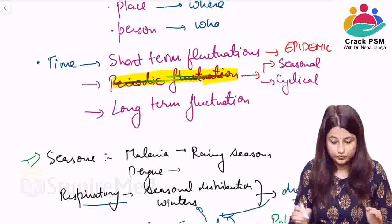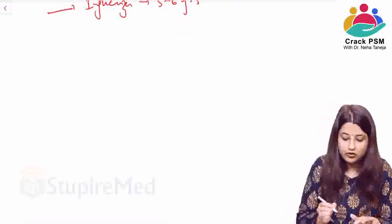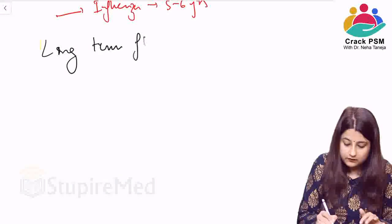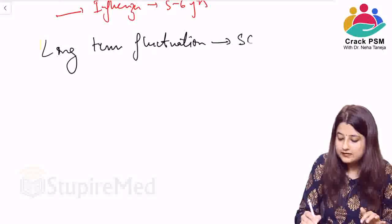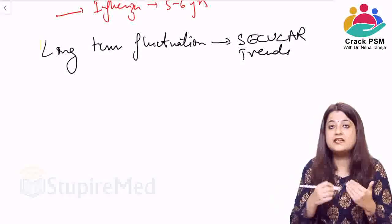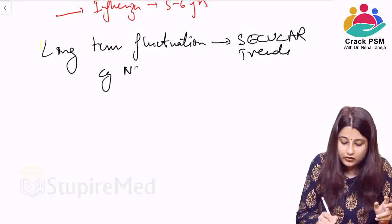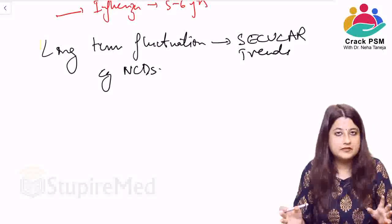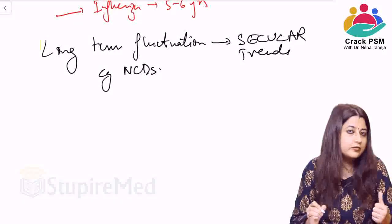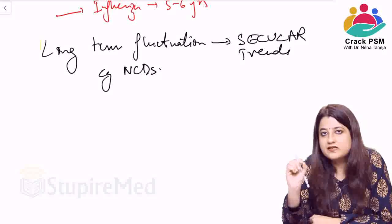The distribution of disease in terms of long-term fluctuation is also known as the secular trend of disease. Secular trend means the pattern of disease occurrence is repeated or keeps changing over decades. An example is non-communicable diseases. We will discuss this in detail in the chapter on descriptive epidemiology.